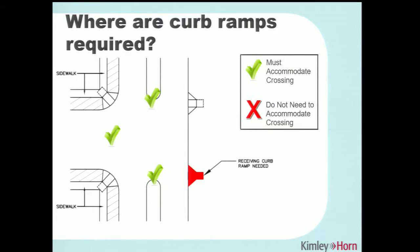Anywhere you see green check marks indicating a pedestrian crossing, you're required to accommodate it. When that happens, not only do the curb ramps have to be installed and compliant, but the pedestrian street crossings also need to be compliant.